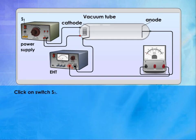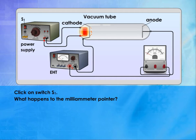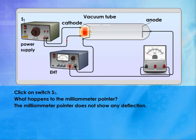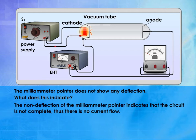Click on switch S1. What happens to the milliammeter pointer? The milliammeter pointer does not show any deflection. What does this indicate? The non-deflection of the milliammeter pointer indicates that the circuit is not complete. Thus, there is no current flow.